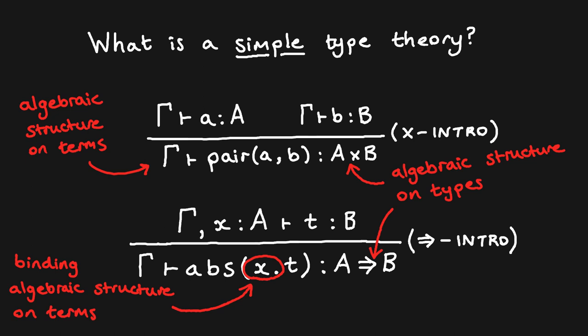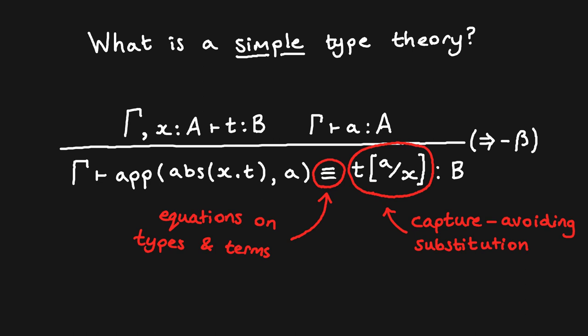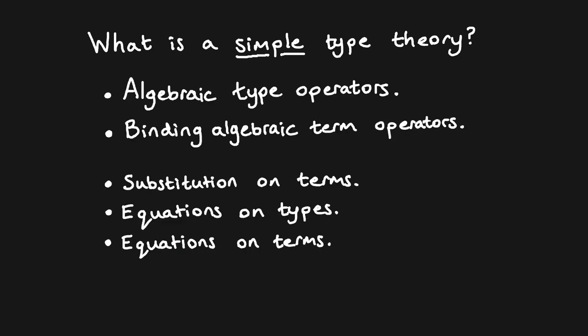Note that binding algebraic structure is described by natural deduction rules whose context may be extended by fresh variables. In addition to the structure of type and term operators, we also have equational structure. In a simple type theory, we may declare both types and terms to be judgmentally equal. Finally, we have a notion of capture-avoiding substitution for terms, which is necessitated by the variable binding structure. Capture-avoiding substitution is needed, for instance, to express the beta rule for function application. In summary, we consider a simple type theory to be some structure with algebraic type operators and multi-sorted binding term operators, as well as a notion of capture-avoiding substitution on terms, and equations on both types and terms.